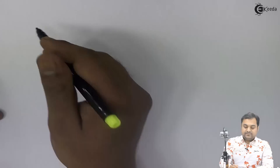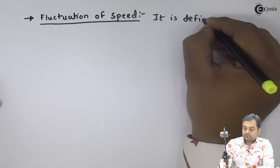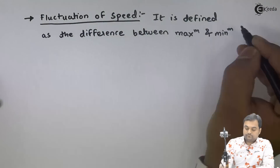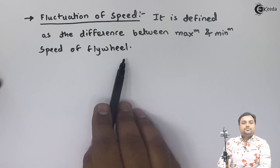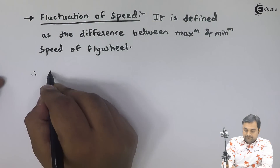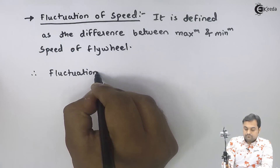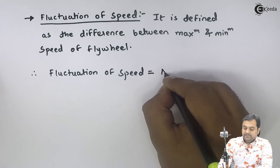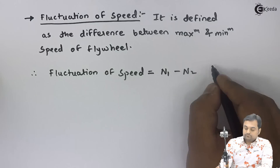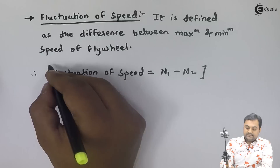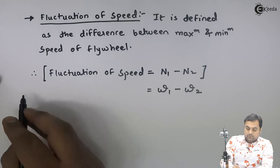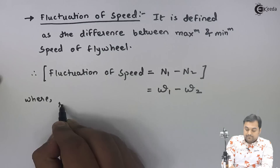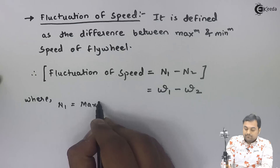Fluctuation of speed can be defined as the difference between maximum and minimum speed of a flywheel. Fluctuation of speed will be equal to n1 minus n2, or it can even be said as omega 1 minus omega 2, where n1 is the maximum speed of the flywheel.